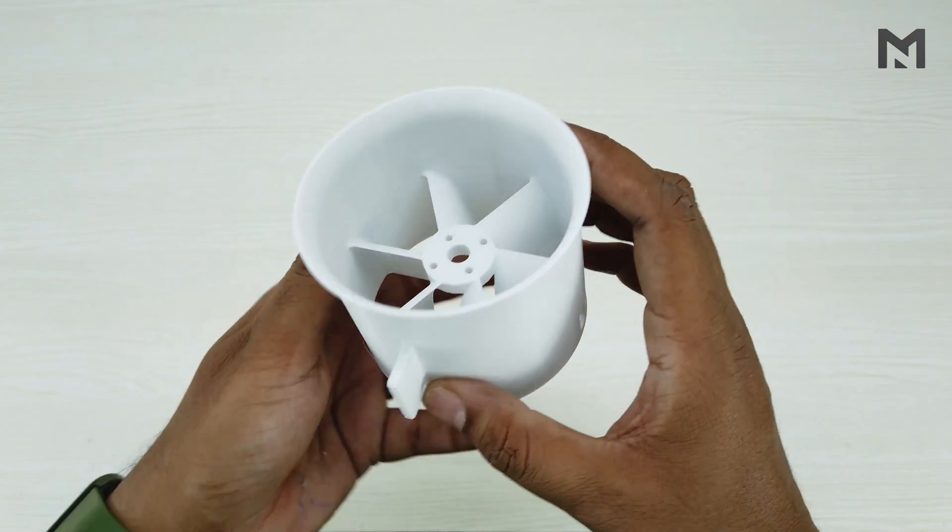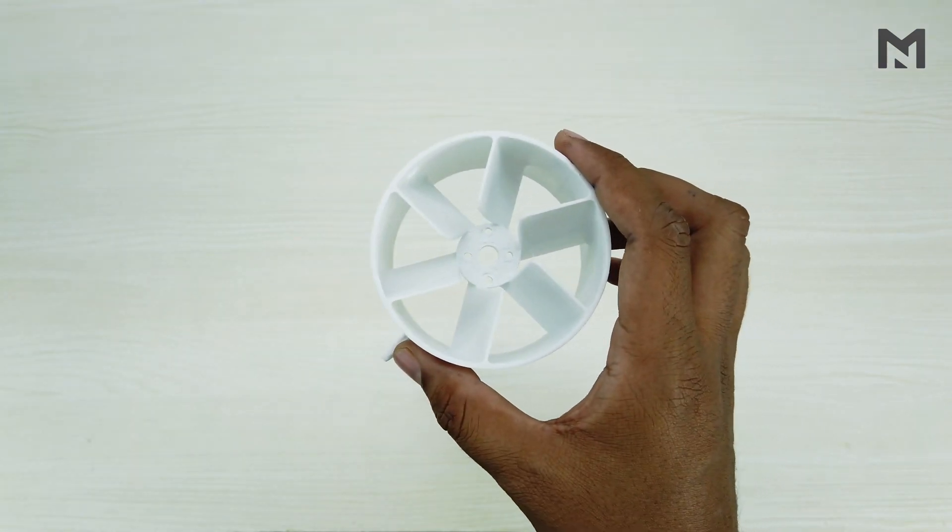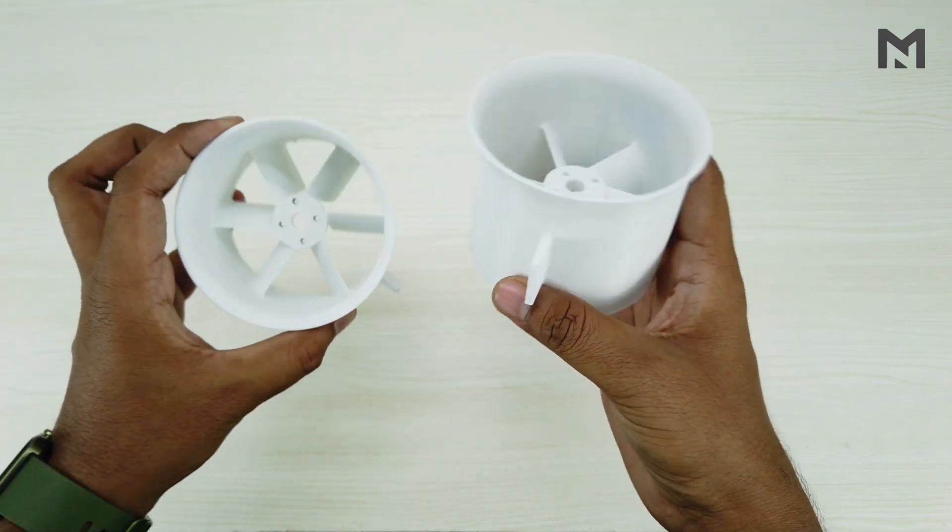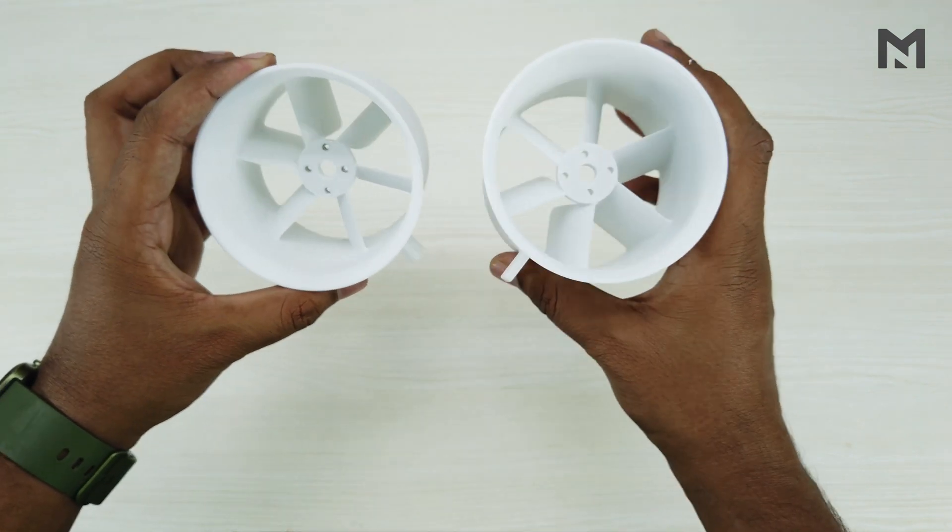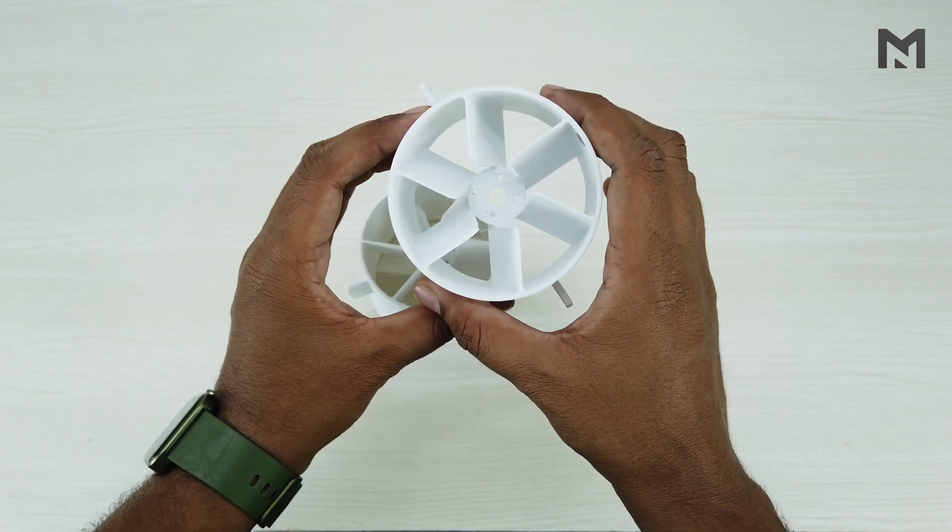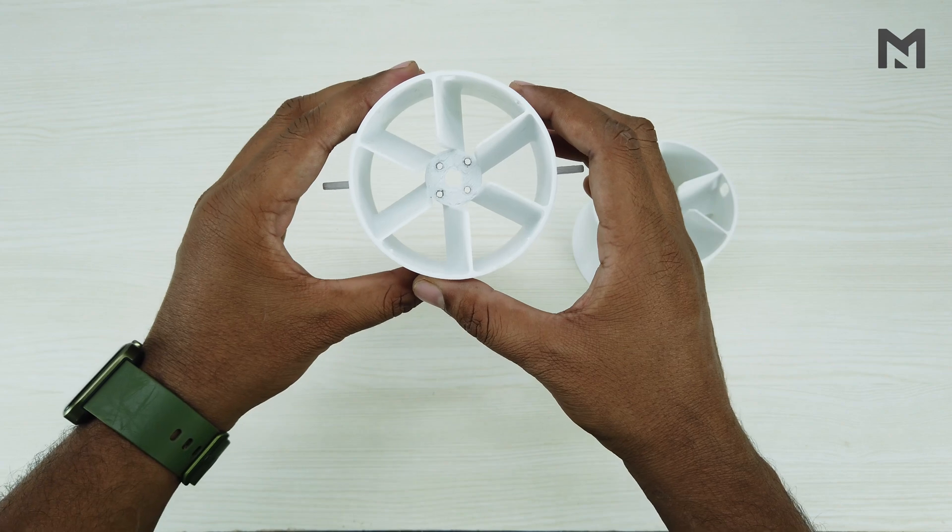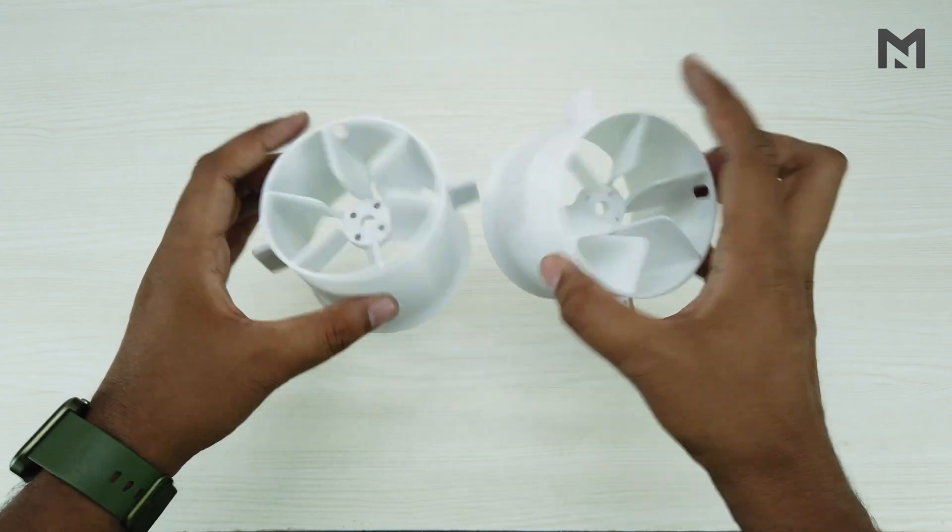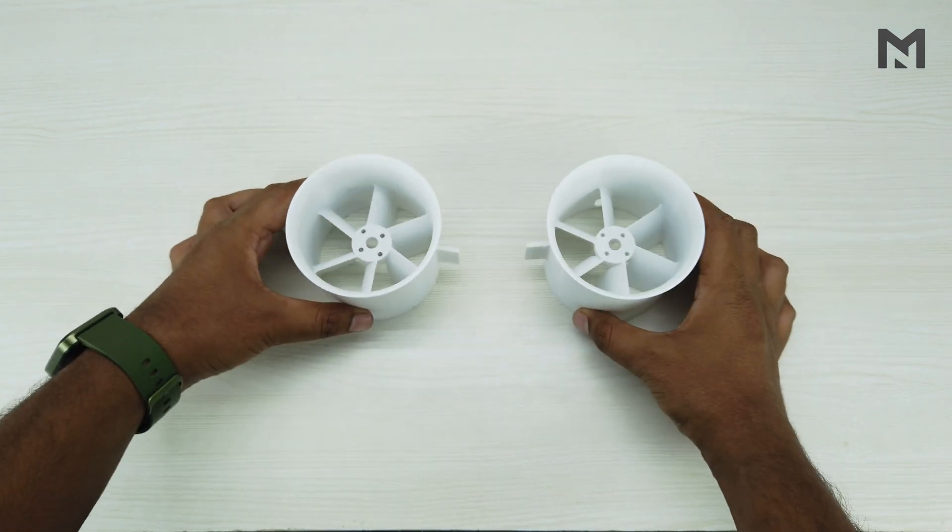After removing the support material, the outer casing will look like this. Since I was not sure about the pitch angle of the stator blade, I designed another EDF with a low pitch angle blade. This case has the higher pitch angle blade and this one has the lower pitch angle blade. We will compare both and use the most efficient one.